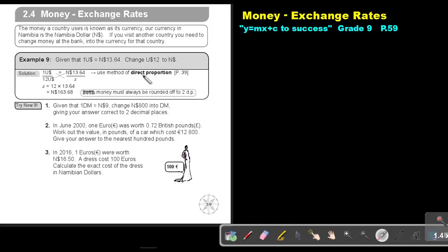Can you still remember direct proportion? We are going to do it with direct proportion. Because the more US, the more Namibian dollar. The less US, the less Namibian dollar.